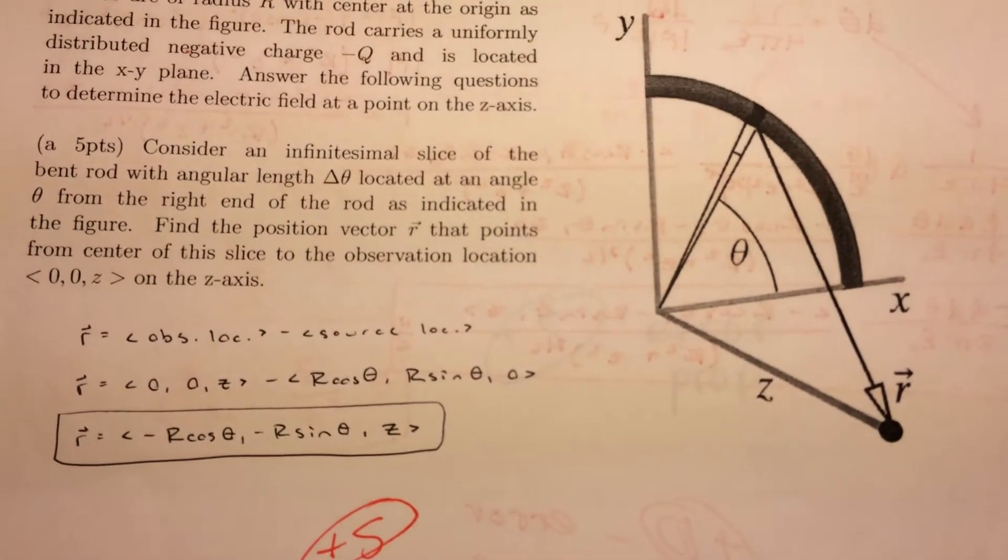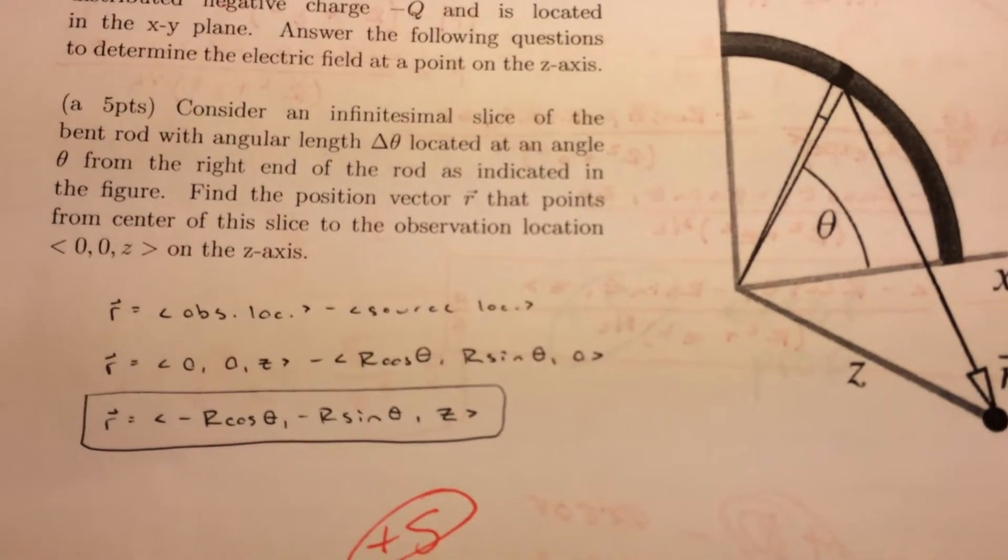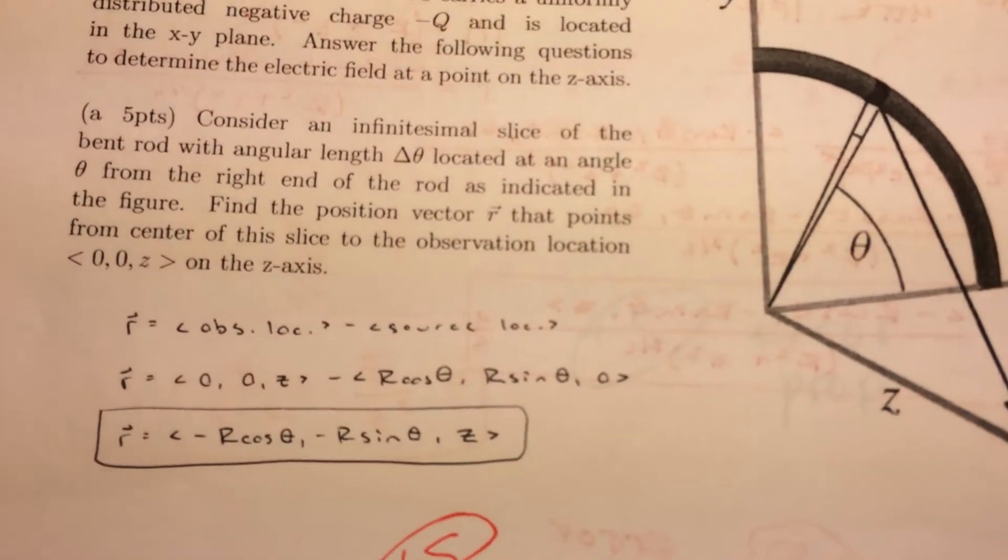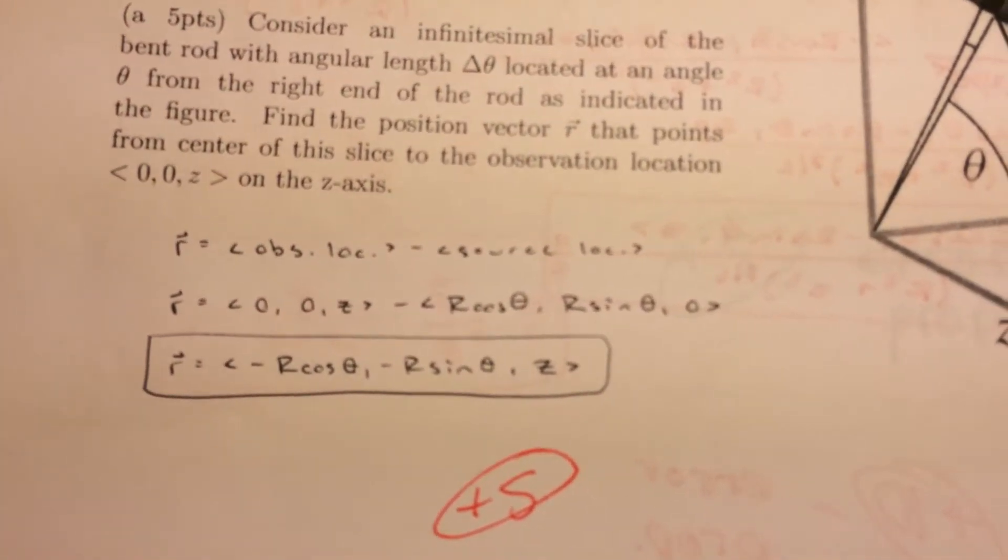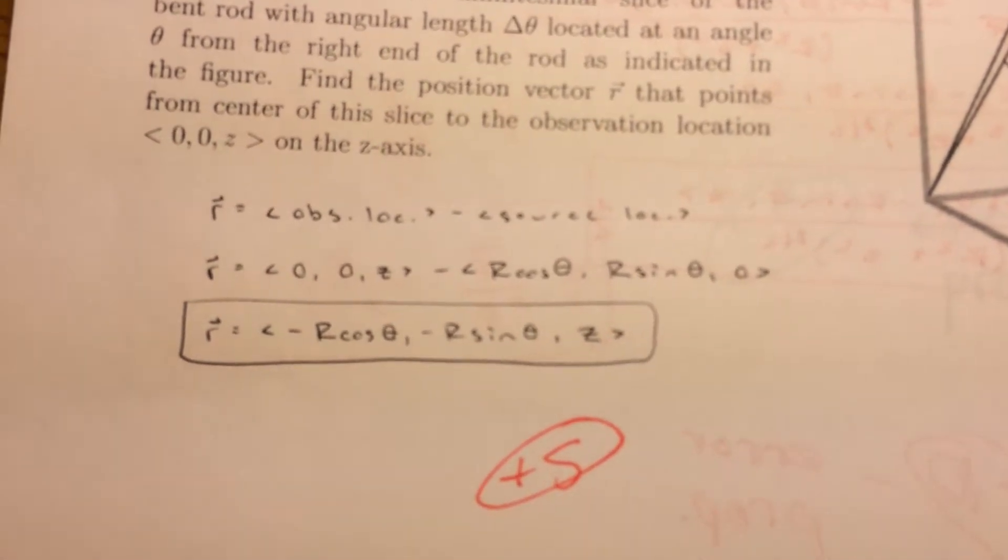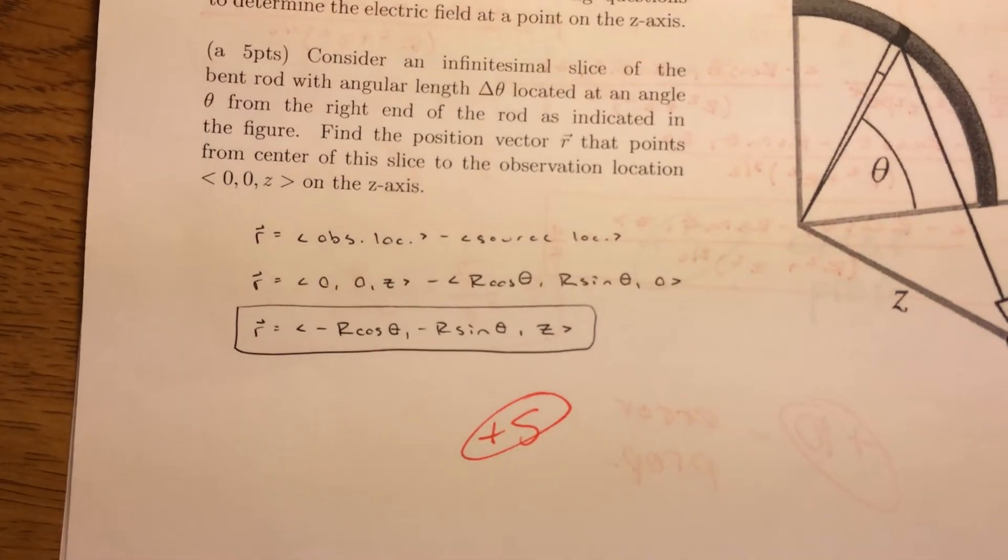which is the horizontal component, otherwise known as the x component, comma r sine theta, which is the vertical component, and comma zero. So that just equates to negative r cosine theta, comma negative r sine theta, comma z.